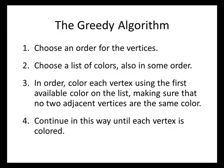Now that we've got our vertices in order and our colors, we're ready to use the greedy algorithm. In order, we're going to color each vertex using the first available color on the list, with the rule being that no two adjacent vertices are the same color. Remember that vertices are adjacent if they are directly connected by an edge. That's the only rule — as long as we never have adjacent vertices that are the same color, we just want to use the lowest numbered color we can at each step, and then continue until each vertex is colored.